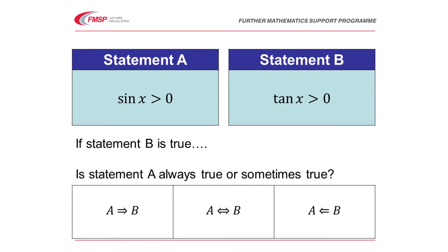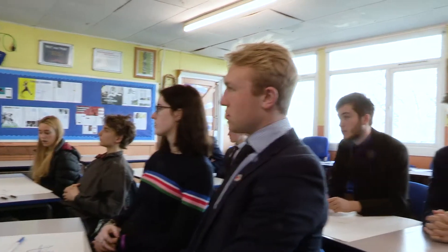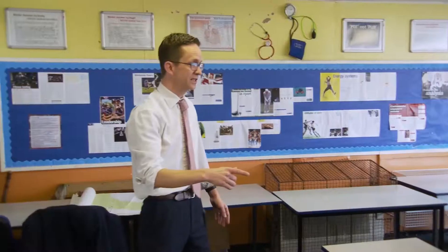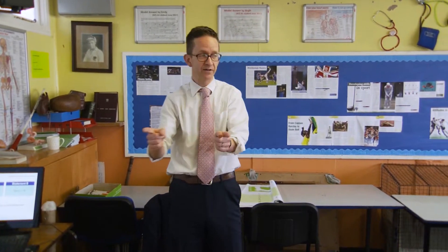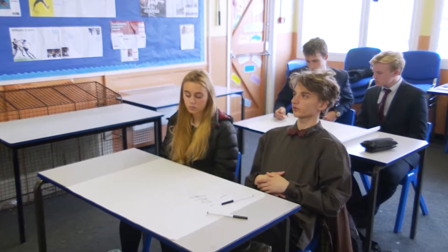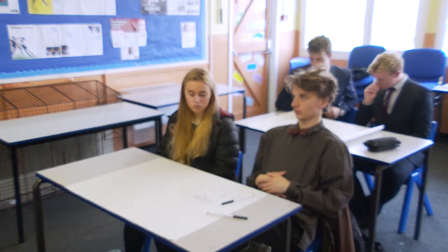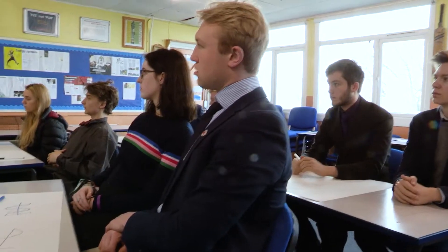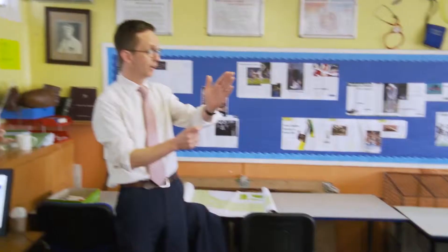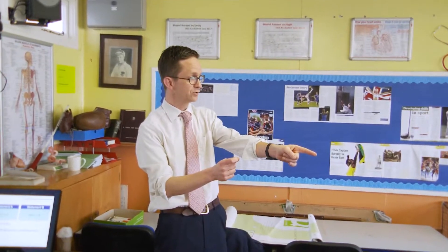The teacher asks: could someone give an example of a value of x where sine of x is bigger than 0 and tan of x is bigger than 0? A student answers '45 degrees.' The teacher then asks for an example where sine of x is bigger than 0 but tan of x is not bigger than 0. A student answers '100 degrees' — anything bigger than 90 but less than 180.